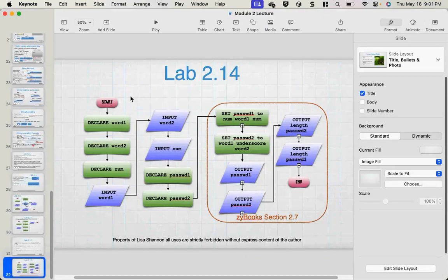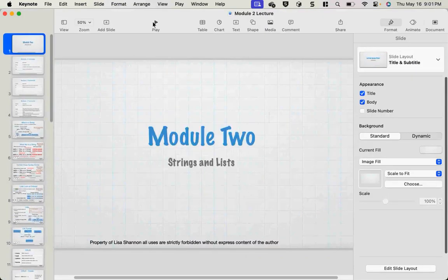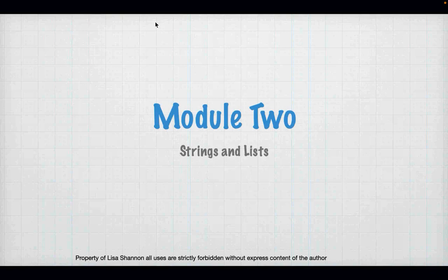This week we are talking about strings and lists. Strings are important in Python because Python assumes everything is a string unless you tell it otherwise. You need to know how to change a string, create a string, understand the parameters around it, and correct errors. We're also going to talk about lists because a string is a list — a specific type of list — and a list is simply a collection of things. For a string, it's a collection of characters.